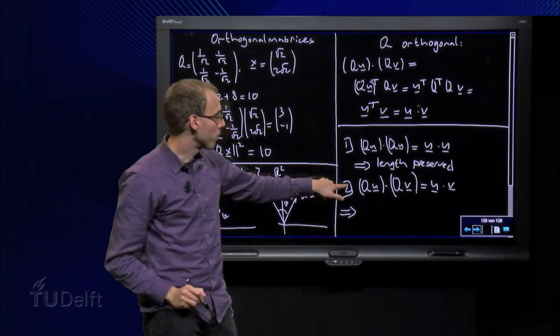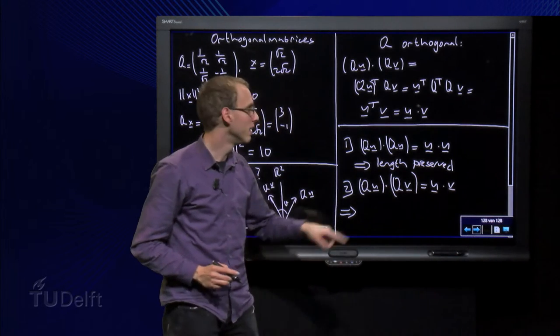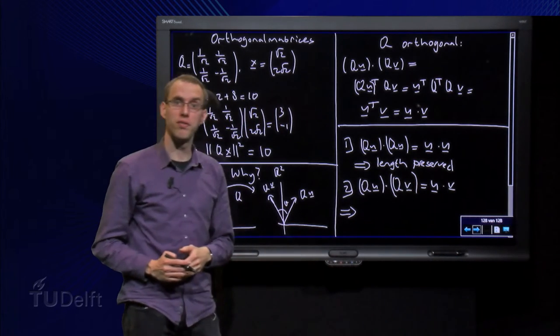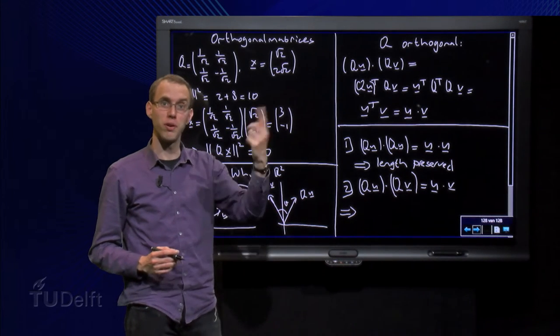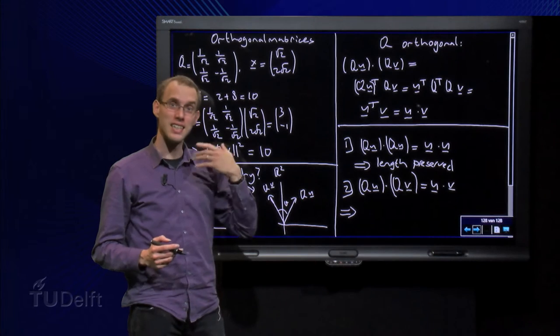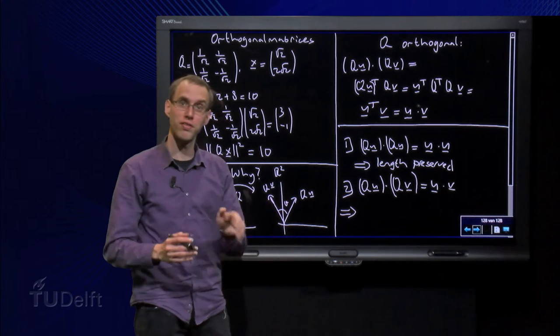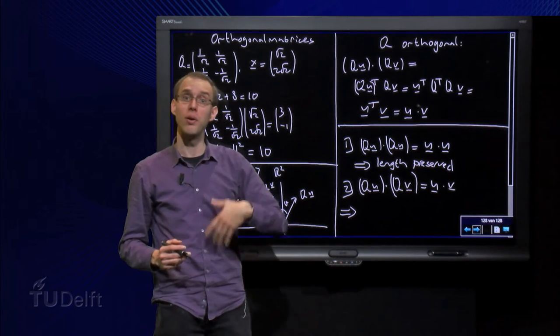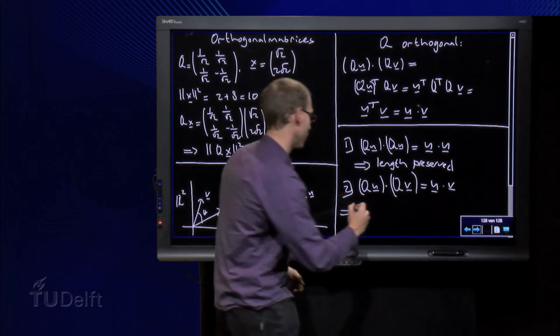If we take the inner product between two different vectors, so Qu inner product Qv, that equals U inner product with V. But we know that the cosine of an angle equals the inner product divided by the lengths. Since the lengths are preserved, and now also the inner product between the different vectors is preserved, we know that the cosine of the angle is preserved. So the angles are preserved as well.